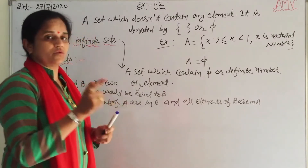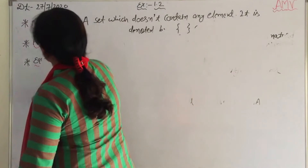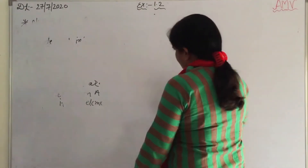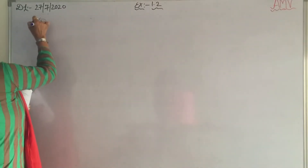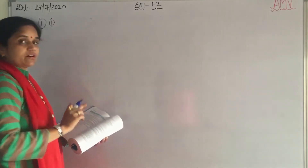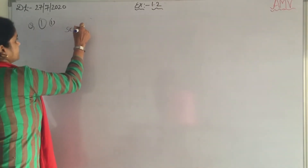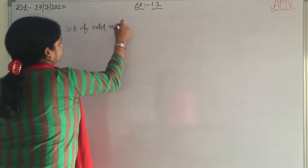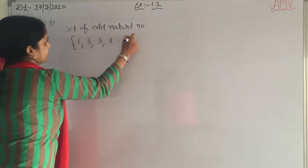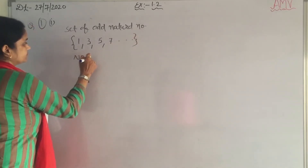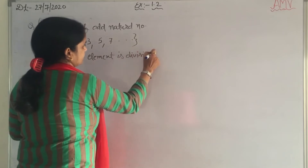Now let's continue with Exercise 1.2 — it will make things more clear. Open your textbook. The first question is: set of odd natural numbers divisible by 2. Odd natural numbers are 1, 3, 5, 7, and so on.